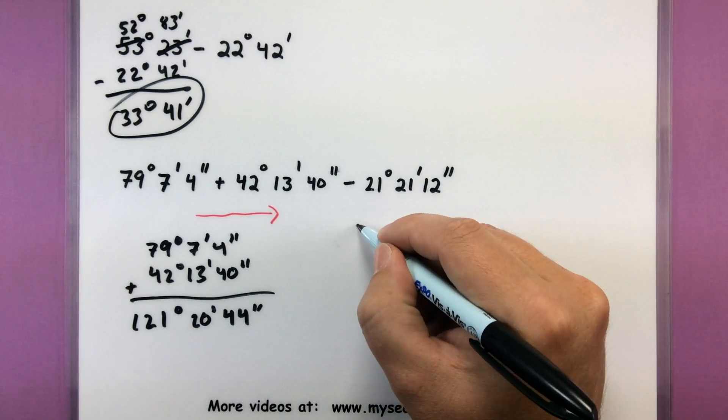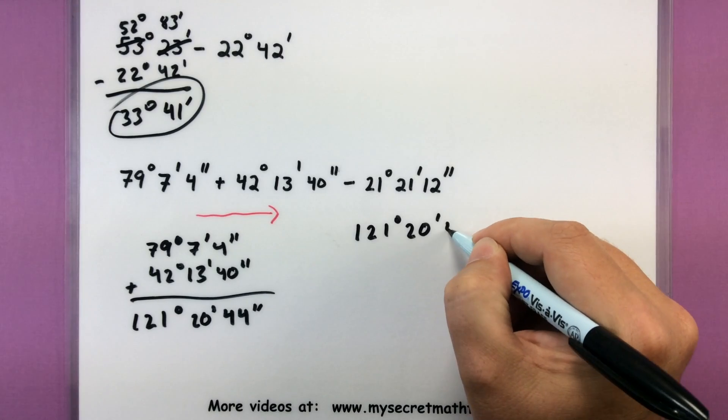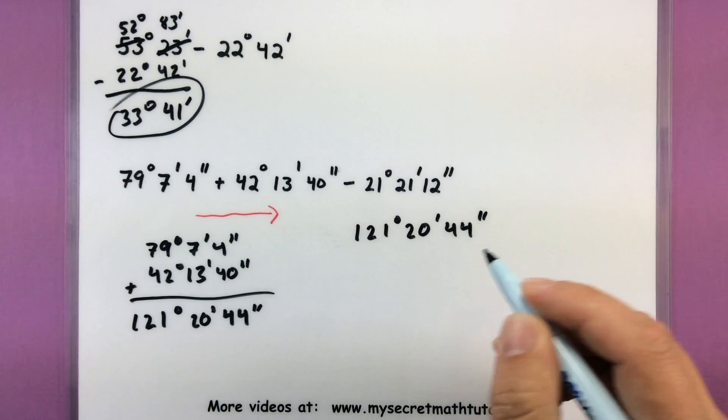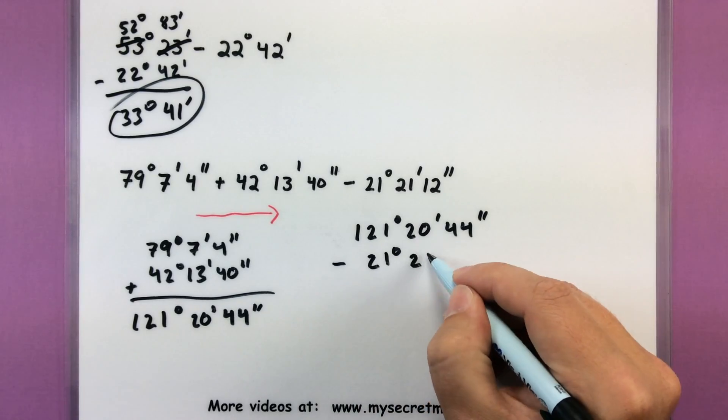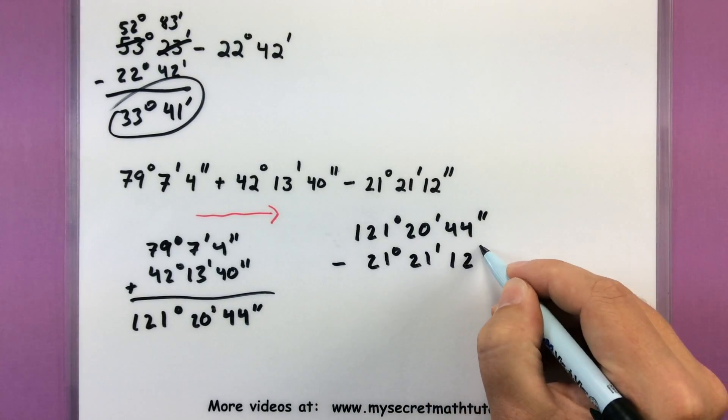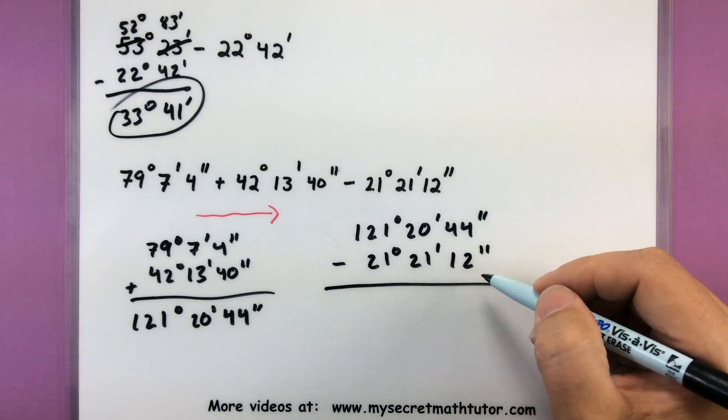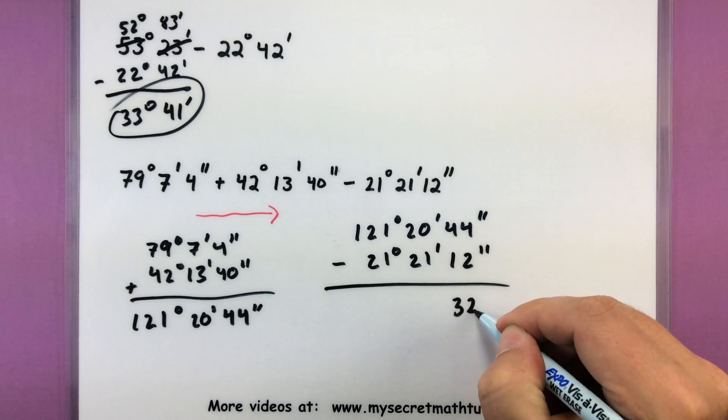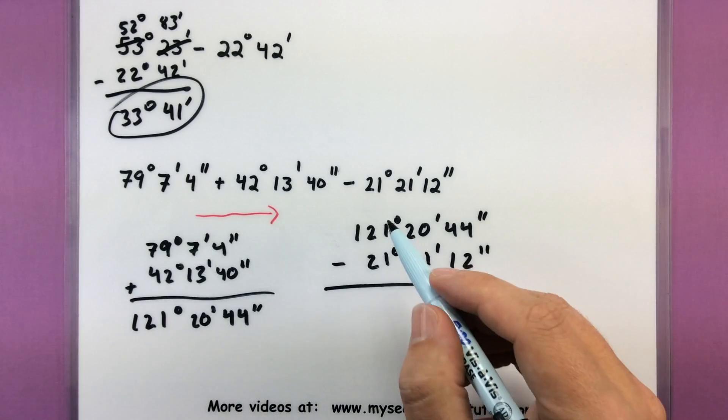So now that we have our result, we can go ahead and take care of our subtraction piece. So from this we'll be subtracting 21 degrees, 21 minutes, and 12 seconds. Away we go. So 44 minus 12 gives us 32. 20 minus 21, oh boy, we don't have enough. We need to borrow.